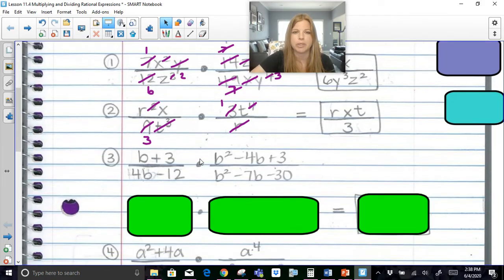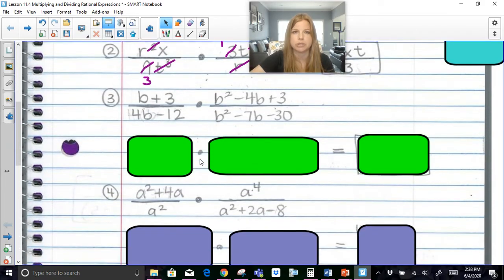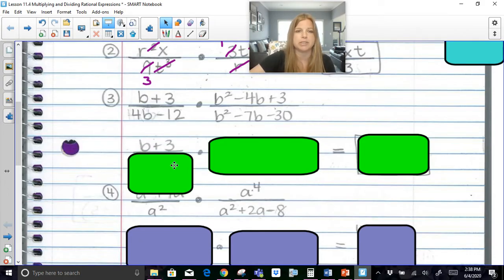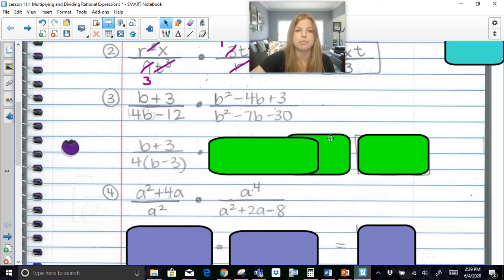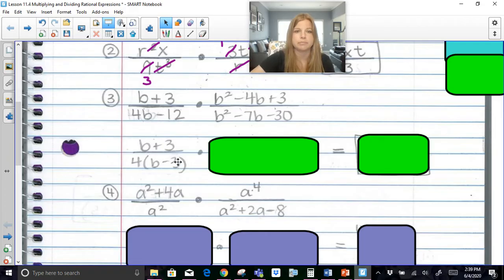So now let's get past the monomials and work with some binomials and trinomial problems. So I need to simplify and factor whatever I can so that I can cross simplify. Because right now the way this looks, there's nothing I can simplify. So b plus 3 is just b plus 3. 4b minus 12, it's a binomial. There is a greatest common factor. The GCF here is 4. So I'm going to go ahead and factor out a 4 and I would be left with b minus 3.